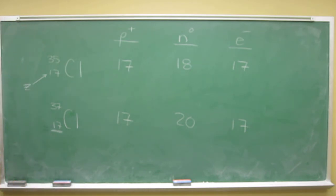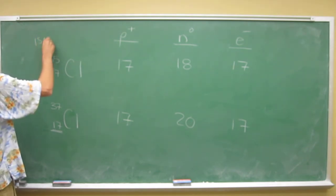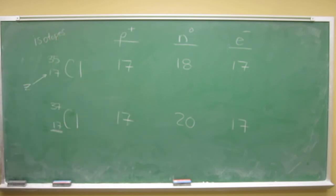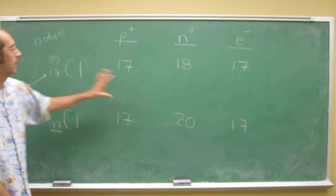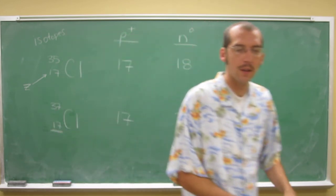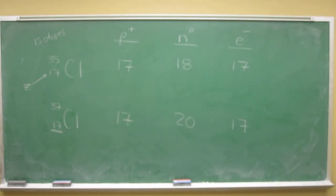We've done that before for individual atoms, but now we're looking at isotopes and comparing them. What we see is the only difference between these isotopes is that their mass numbers are different because the number of neutrons they have is different.